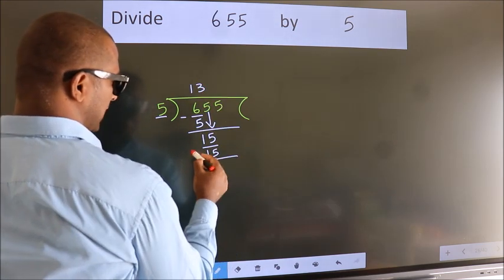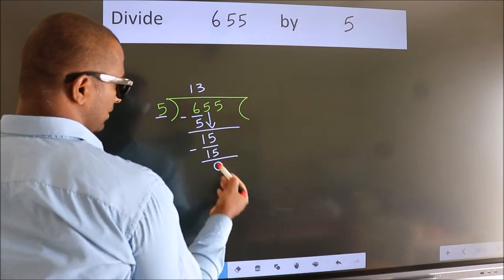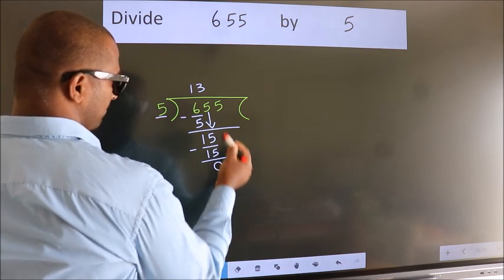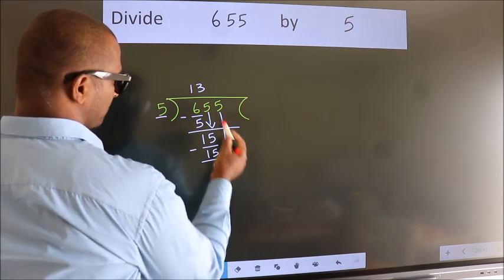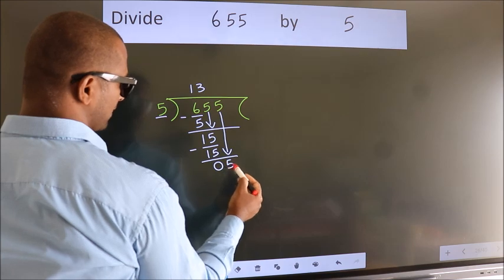Now we subtract. We get 0. After this, bring down the beside number. So 5 down, making 5.